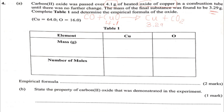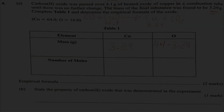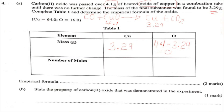Can you get the mass of oxygen? The mass of copper is 3.29 g. The mass of oxygen is the mass of copper 2 oxide (4.1 g) minus the mass of copper that remains (3.29 g). Therefore, the mass of oxygen is 0.81 grams.